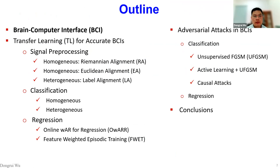This tutorial consists of the following parts. I have a lot of materials and we may not have enough time to cover all of them. First, I will give a brief introduction of brain-computer interfaces and then introduce several transfer learning approaches for accurate BCIs, particularly signal processing approaches including Euclidean alignment for homogeneous transfer learning and label alignment for heterogeneous transfer learning. Next, I'll introduce adversarial attacks in BCIs for classification and regression problems. Finally, concluding remarks and Q&A.